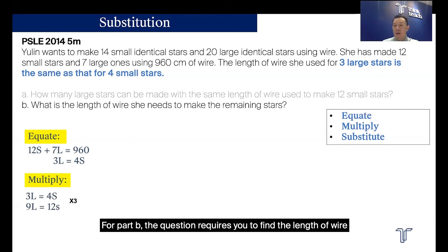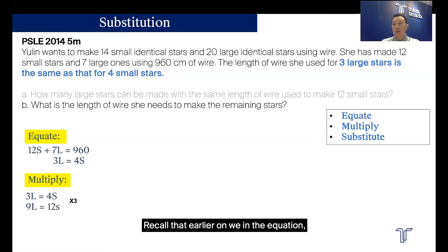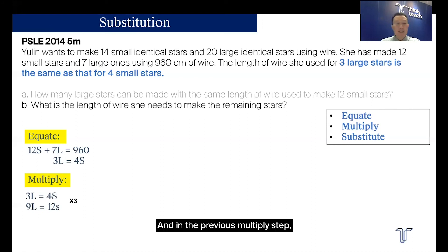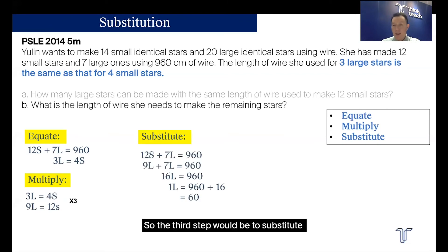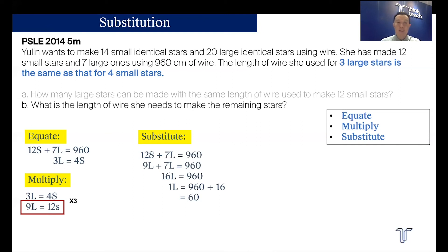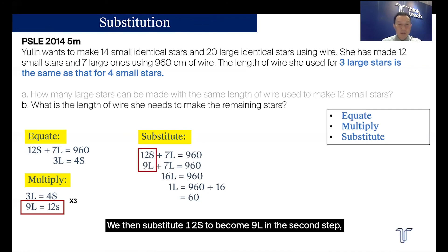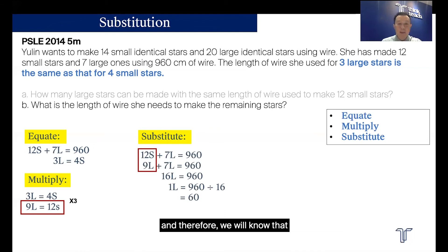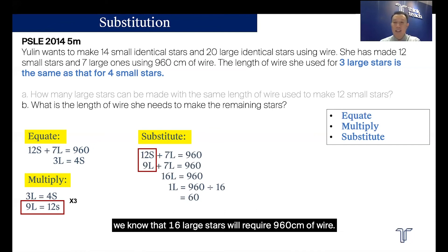For part B, the question requires you to find the length of wire required to make the remaining stars. Recall that earlier we had 12s + 7l = 960 cm. In the previous multiply step, we obtained 9l = 12s. So the third step is to substitute 9l for 12s in the equation, converting everything to large stars. Therefore, 9l + 7l = 16l = 960 cm, meaning 16 large stars require 960 cm of wire.